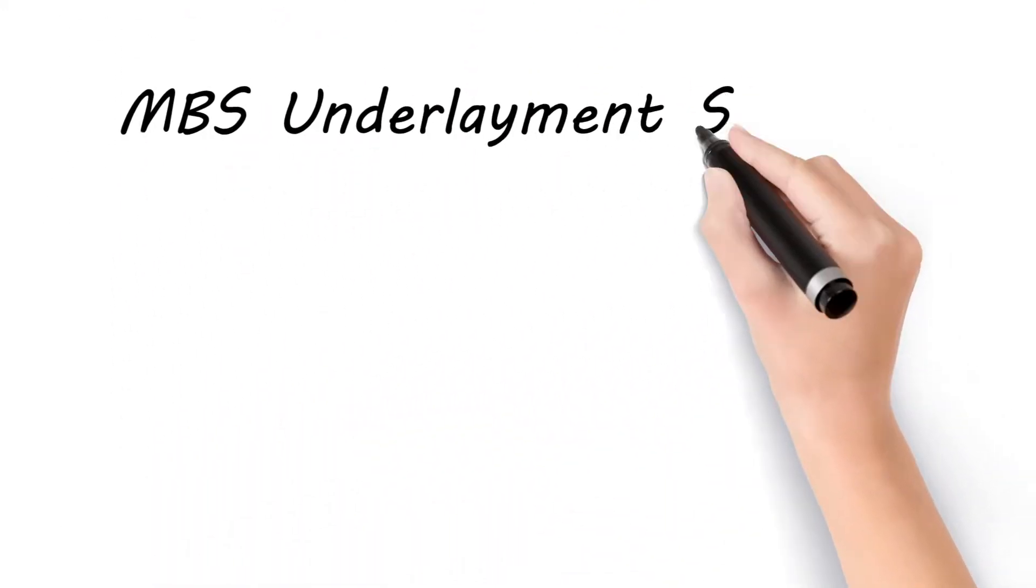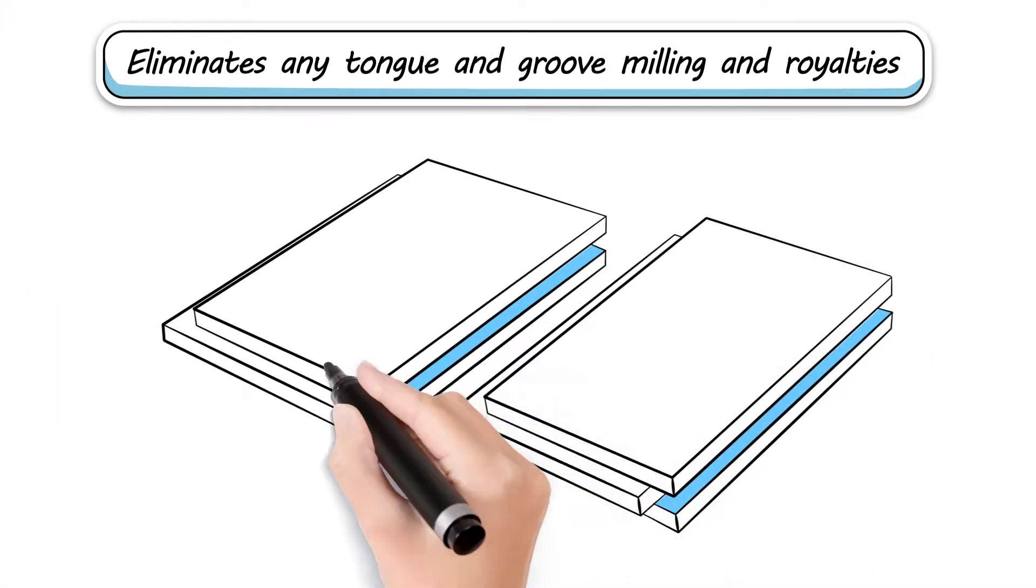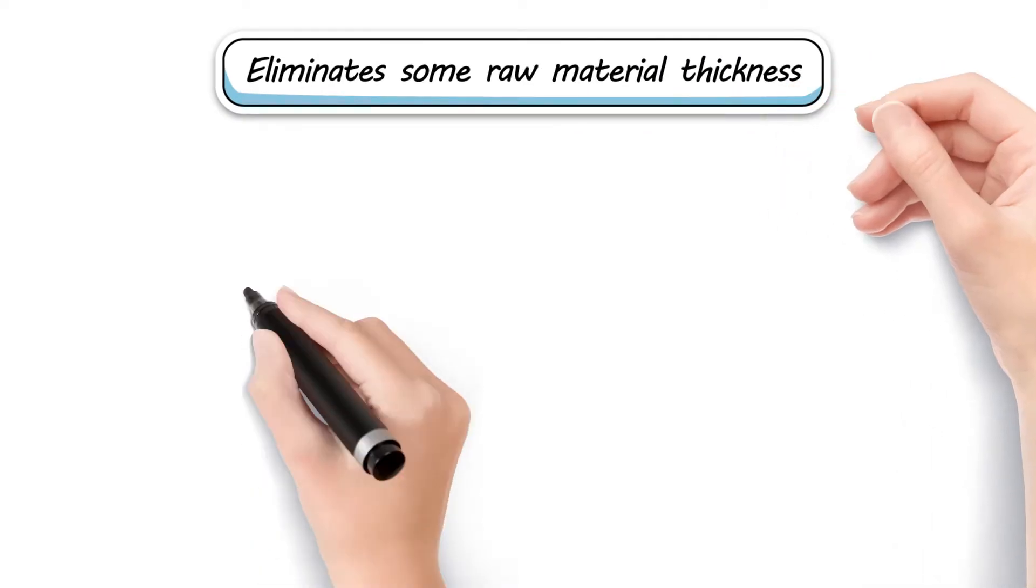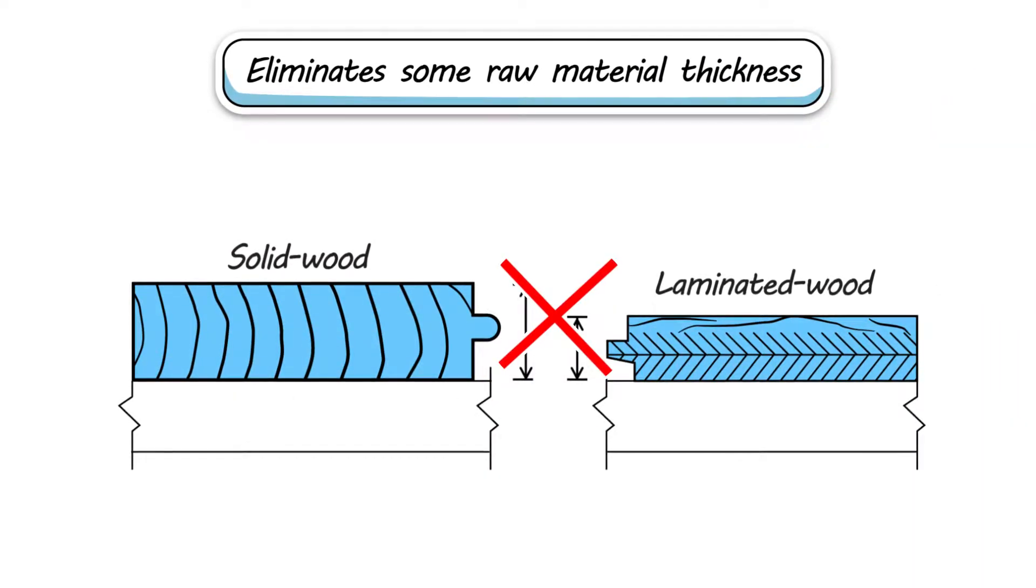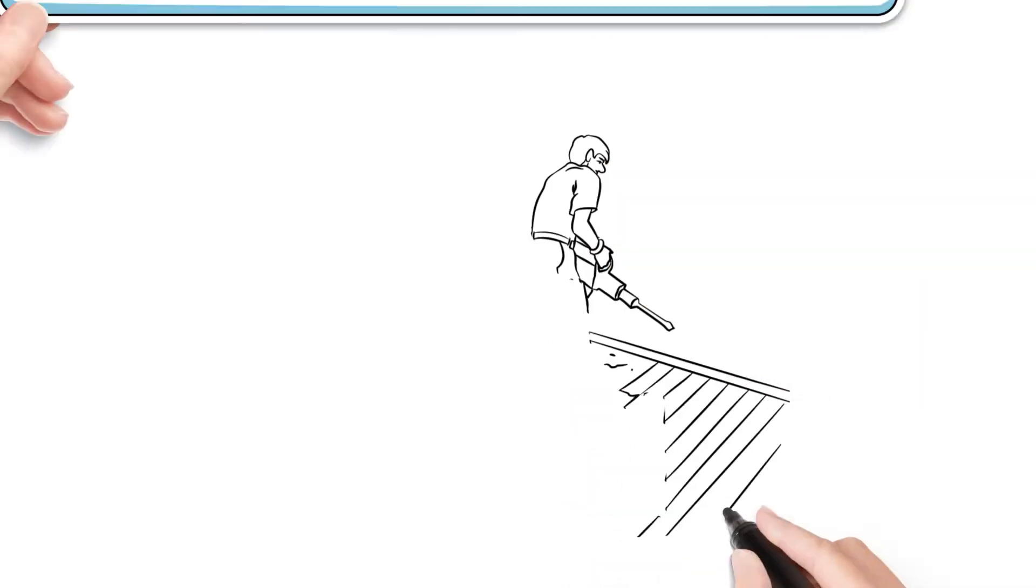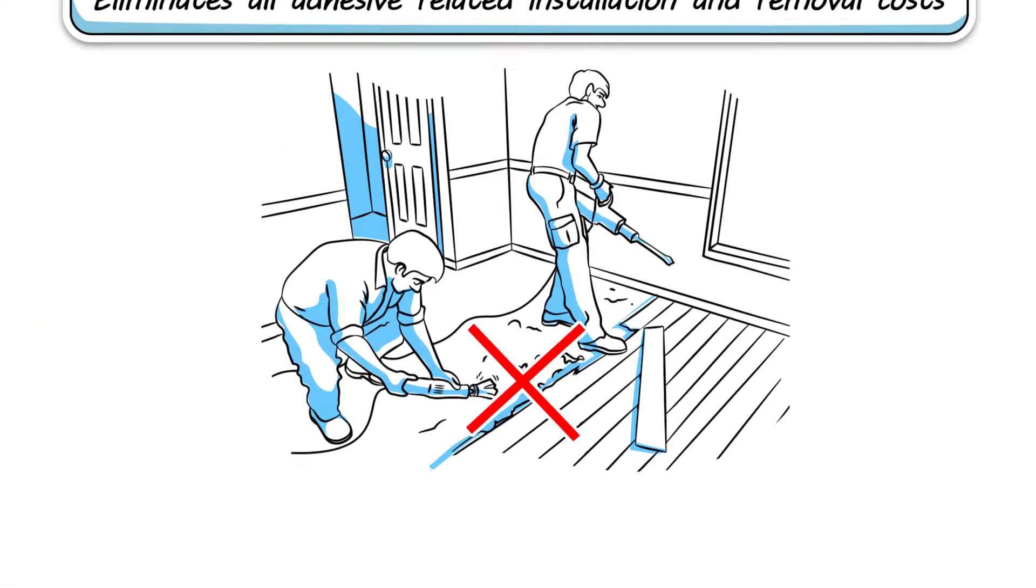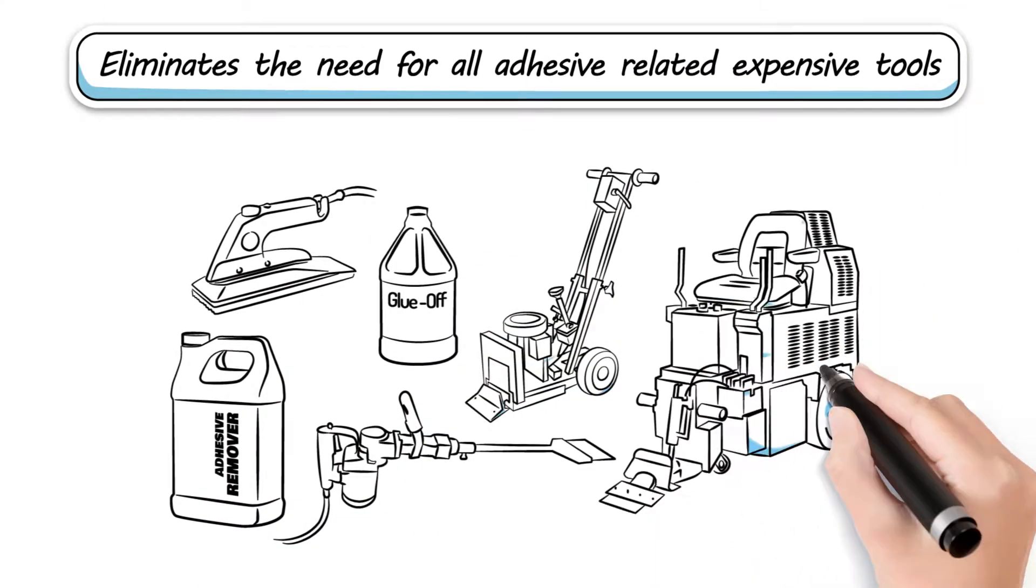MBS Underlayment System eliminates any tongue and groove milling and royalties, eliminates some raw material thickness, eliminates all adhesive related installation and removal costs, eliminates the need for all adhesive related expensive tools.